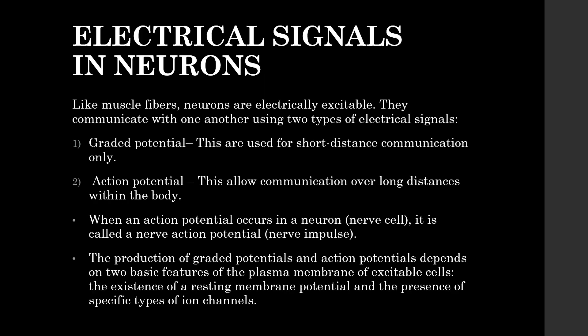Electrical Signals in Neurons. Like muscle fibers, neurons are electrically excitable and communicate with one another using two types of electrical signals. First, graded potentials, which are used for short-distance communication only. Second, action potentials, which allow communication over long distances within the body. When an action potential occurs in a neuron, it is called a nerve action potential. The production of graded potentials and action potentials depends on two basic features of the plasma membrane: the existence of a resting membrane potential and the presence of ion channels.